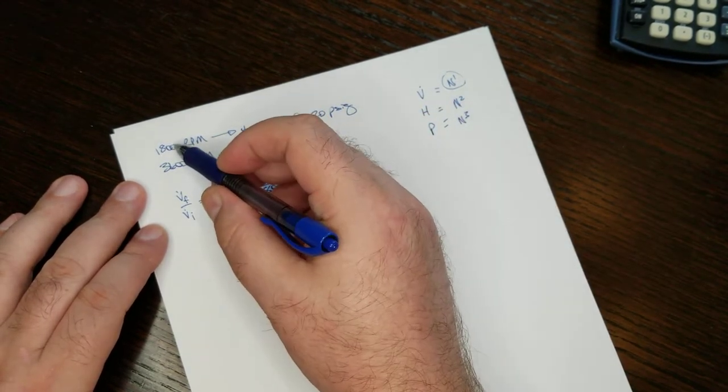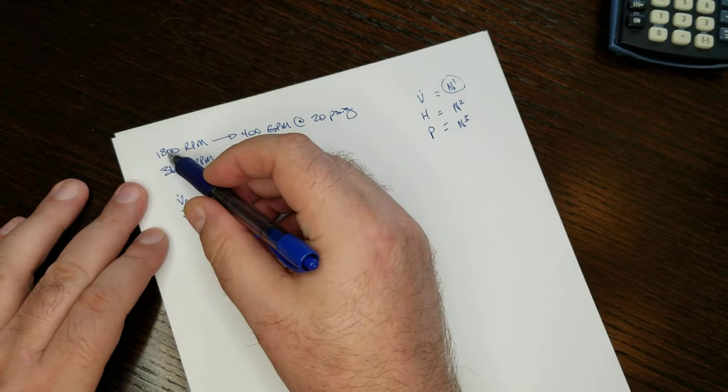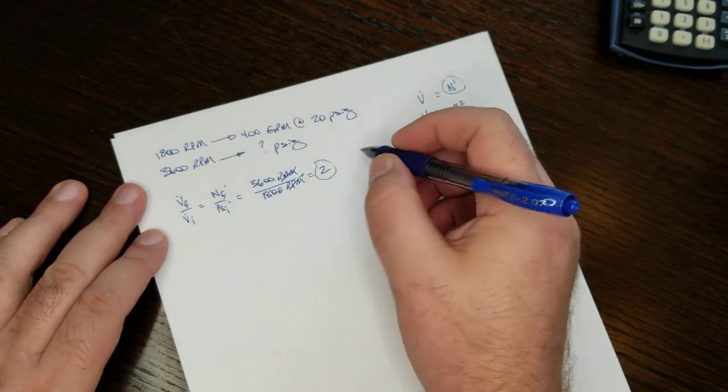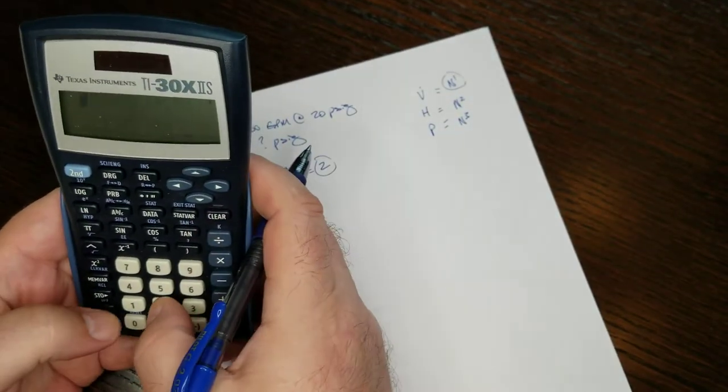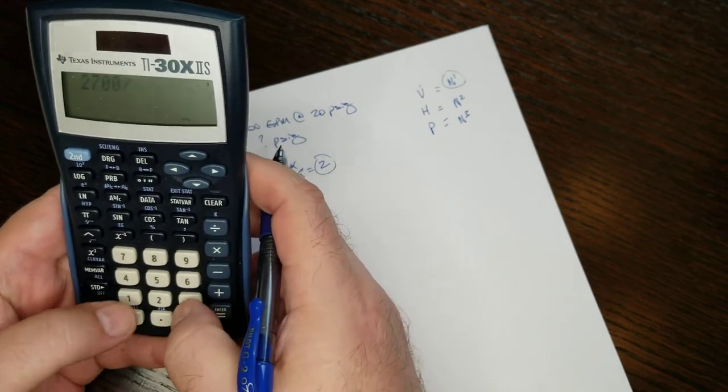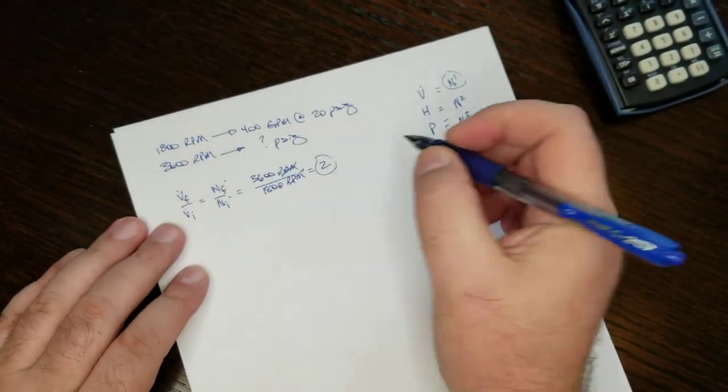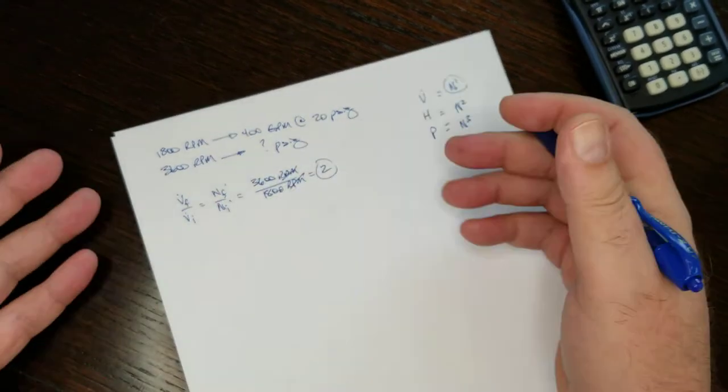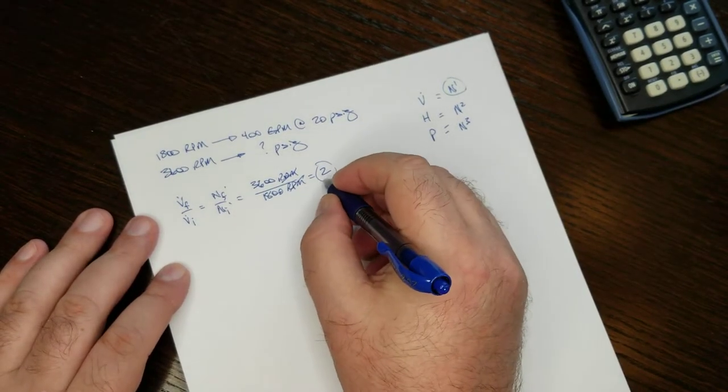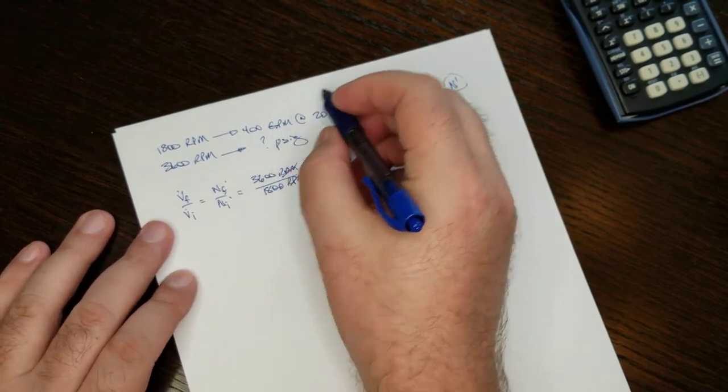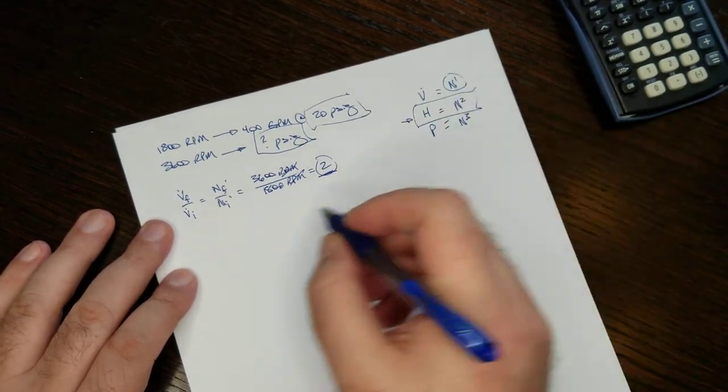If it had changed by half again as much, instead of 1800 to 3600, if it had only gone up by 900 rpm and was 2700 rpm, then it'd be... let me do that math. Don't do that in my head. Give me a sec. 2700 divided by 1800, 1.5. Yep. Then the factor would be 1.5. Whatever that factor is, that's what we use to figure out the pump head and the pump power. So we have a factor change of 2. What it's asking for is the discharge head, the head of the pump discharge pressure.